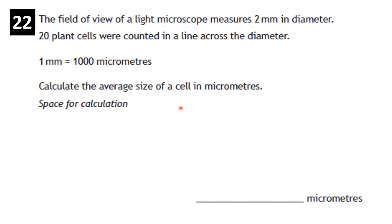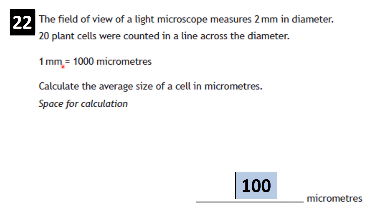Question: the field of view of a light microscope has a diameter of 2 mm, and 20 plant cells are counted across the diameter — calculate the average cell size in micrometres. 2 mm = 2000 µm. 2000 ÷ 20 = 100 µm per cell.